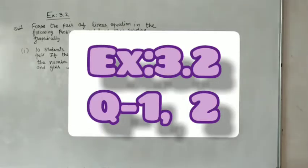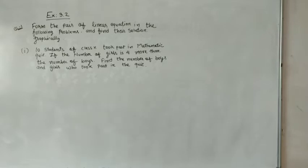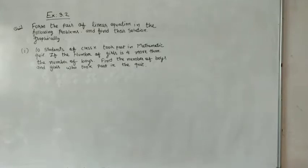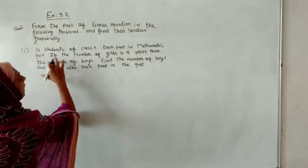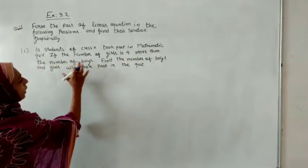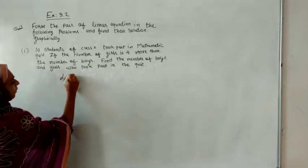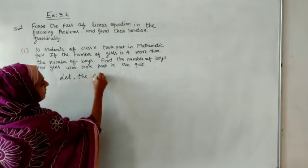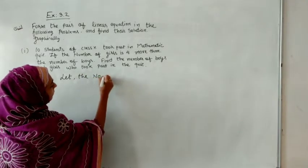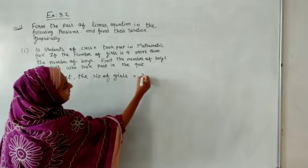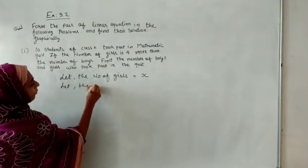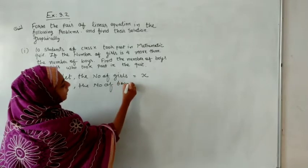Exercise 3.2: from a pair of linear equations in the following problem and find their solution graphically. We have to represent the graph on the graph paper. Here we will discuss what kind of graph we can make. Let us form equations first. Ten students of class take part in a mathematics quiz. Let the number of girls be x and the number of boys be y.